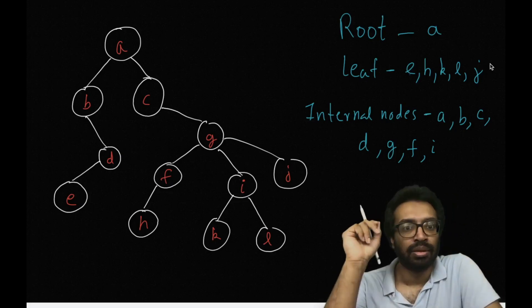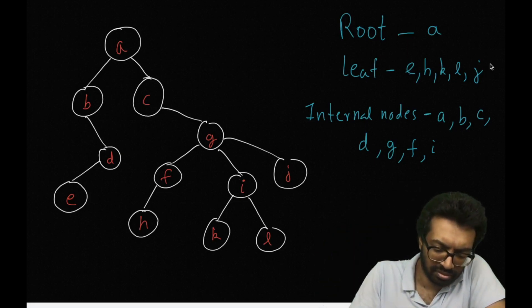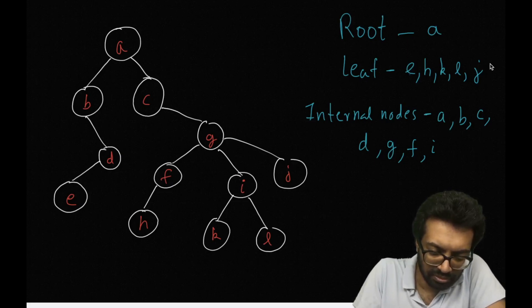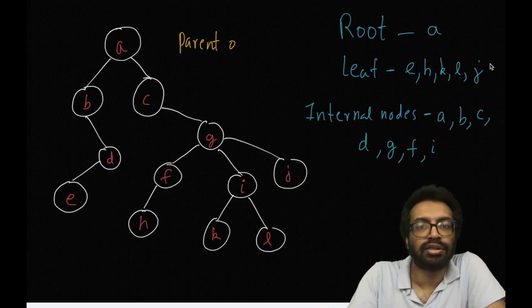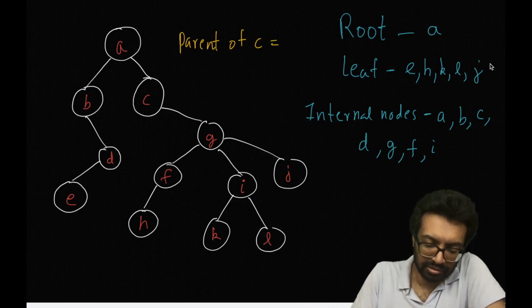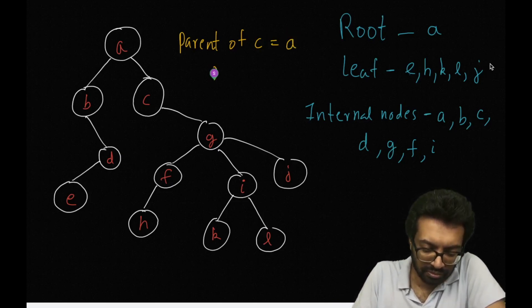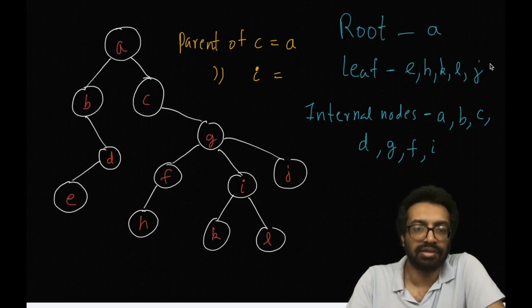We have seen the root, leaf, and internal nodes. Who is the parent of node C? The parent of C is A. What about parent of I? Parent of I is G.